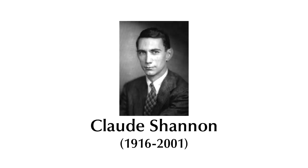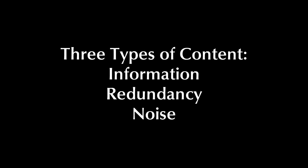Shannon defined three types of content: information, redundancy, and noise. Information is that which actually decreases uncertainty. Redundancy does not decrease uncertainty because either the information is previously known to the recipient or is included elsewhere in the message. Noise is just noise.